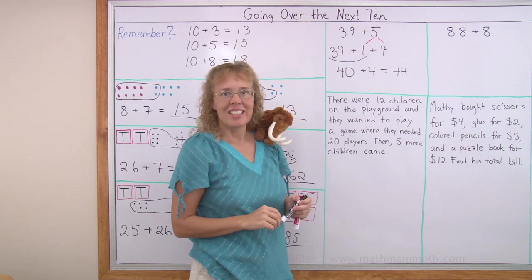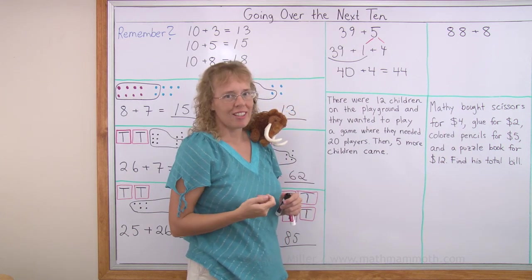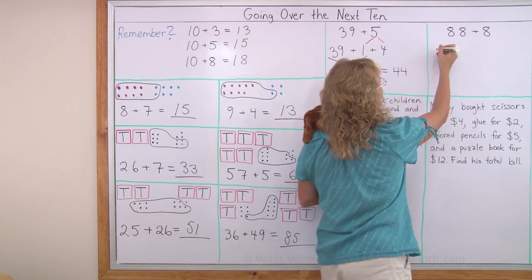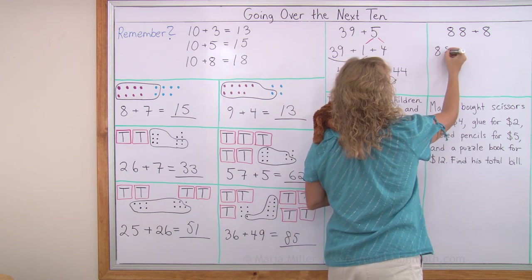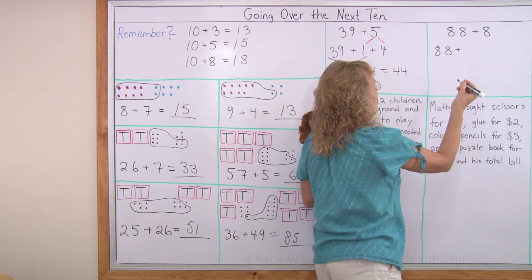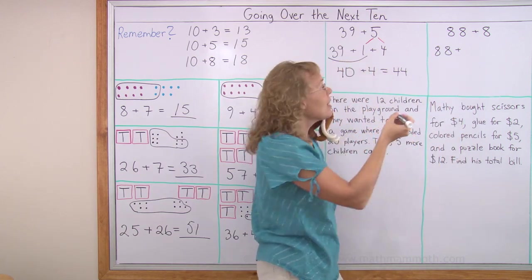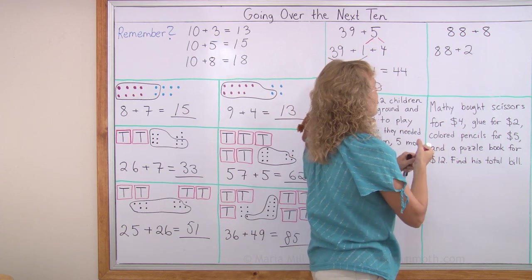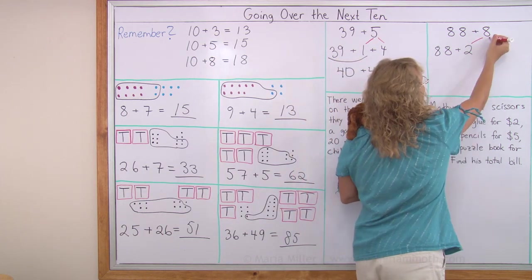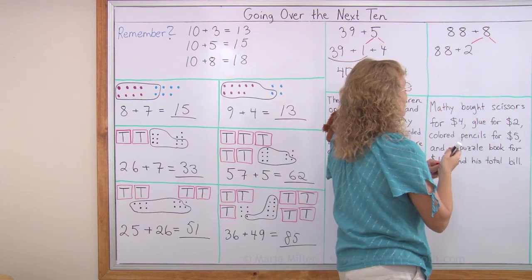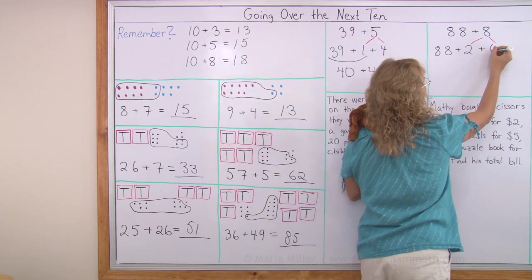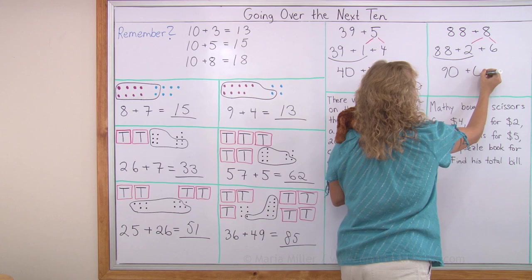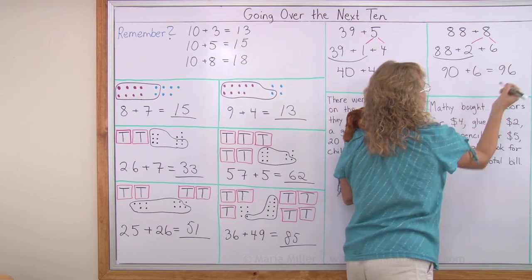You'll study this more in second grade, so don't worry if it looks a little difficult. 88 plus 8. Let's do this one too. This is how I think: 88 plus how many more makes the next 10? Two more, right? And this 2 comes from the 8. And how much is left over will be 6. And now these 2 made the 90, and then I have the 6. 96.